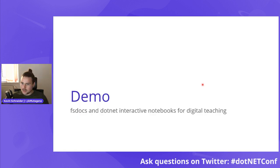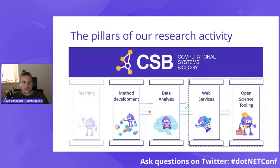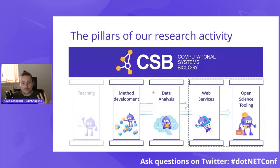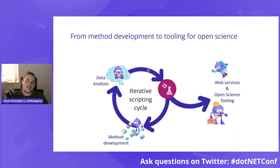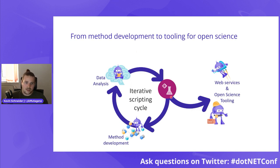Let's go back to the presentation and focus more on the data science part of our work. For both method development and data analysis, what is really the outstanding property of F-Sharp is that it's an amazing prototyping language. You can get going really fast with F-Sharp and get into what I would call an iterative scripting cycle, where you can directly execute code in the scripting environment and get productive really fast. What is also helping us here is the FSLab toolbox.